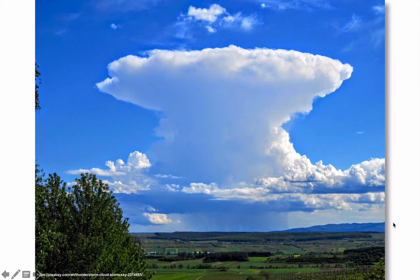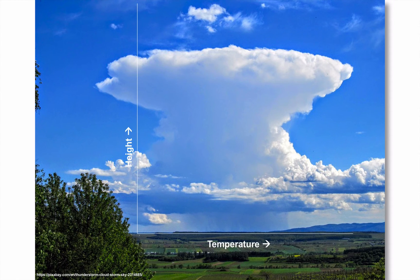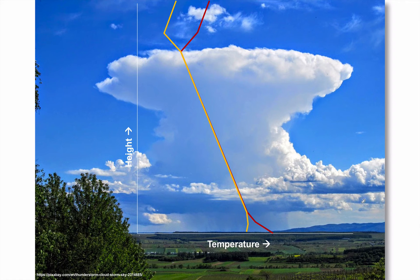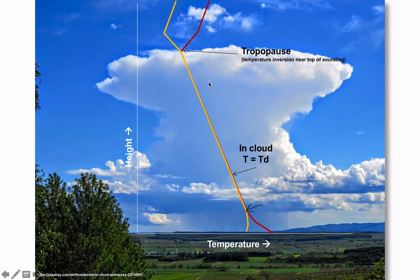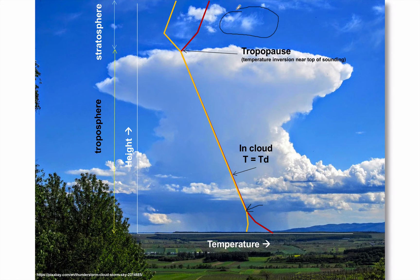Now let's look at a real thunderstorm sounding. The temperature profile traces one line and the dew point temperature profile another. Below the cloud base, the temperature and dew point lines don't touch — we're not in cloud. Above the cloud base, they touch, showing we are in cloud. At the top where they split again above the thunderstorm, we find the tropopause — where temperature warms with height. Below the tropopause we're in the troposphere; above it, the stratosphere.